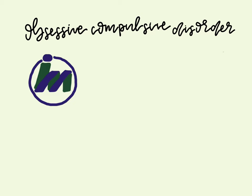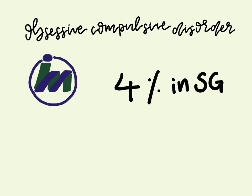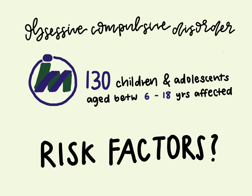According to a Senior Clinical Psychologist at the Institute of Mental Health's Department of Child and Adolescent Psychiatry, OCD could affect up to 4% of youth here, which is almost double the global prevalence of 2% to 3%. From 2014 to 2018, the IMH Child Guidance Clinic saw an average of about 130 children and adolescents aged between 6 and 18 years old affected by OCD a year. This increased rate of OCD in Singapore can be concerning, so let's take a look at what risk factors increase the chance of OCD.